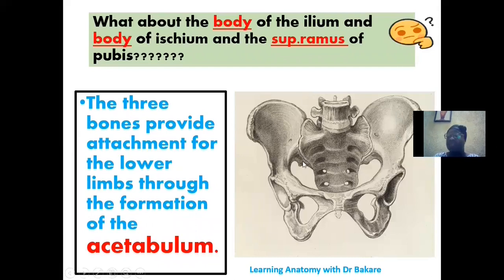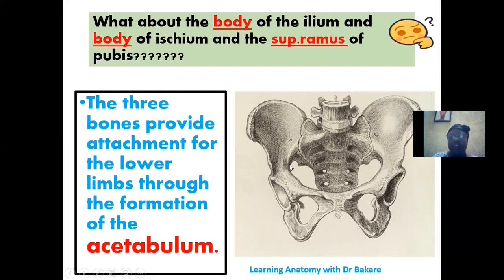The acetabulum is formed by contributions from all three bones of the pelvic girdle: the body of the ilium, the superior ramus of the pubis, and the body of the ischium. This indentation creates the attachment site for the head of the femur, forming the hip joint.